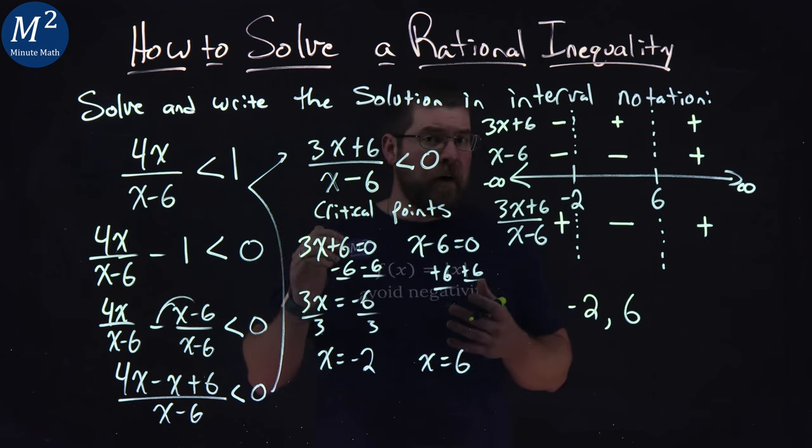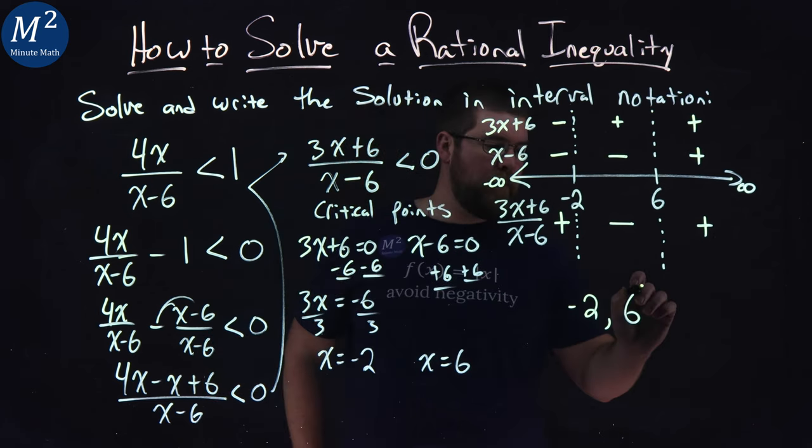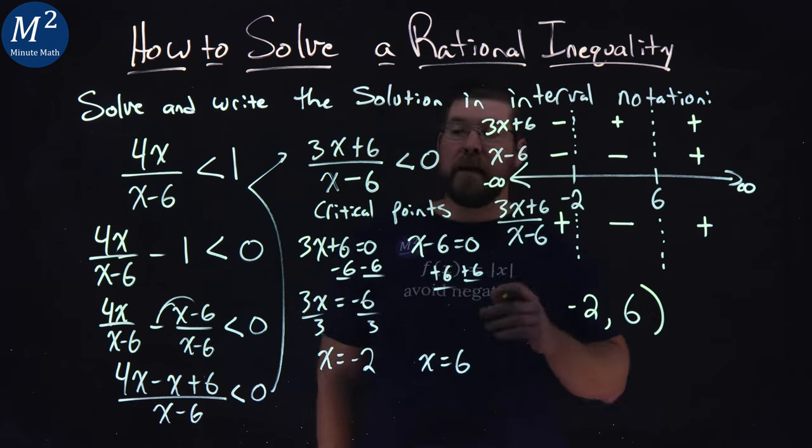Notice I said here that a positive 6 value plugged in causes this denominator to be undefined. When it's undefined, it doesn't exist. We can never equal that value. So we have to put a parenthesis there.